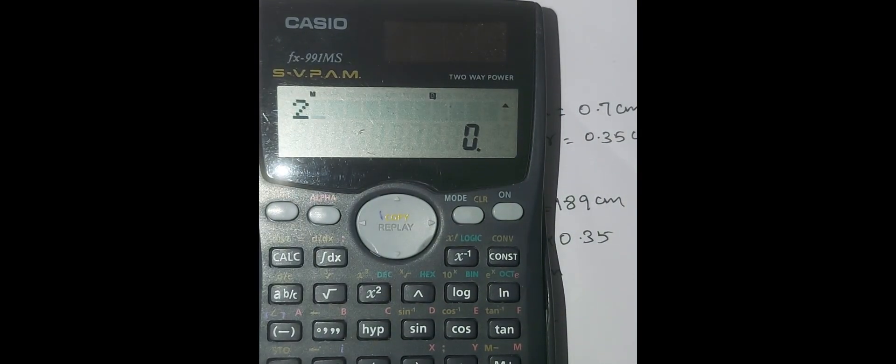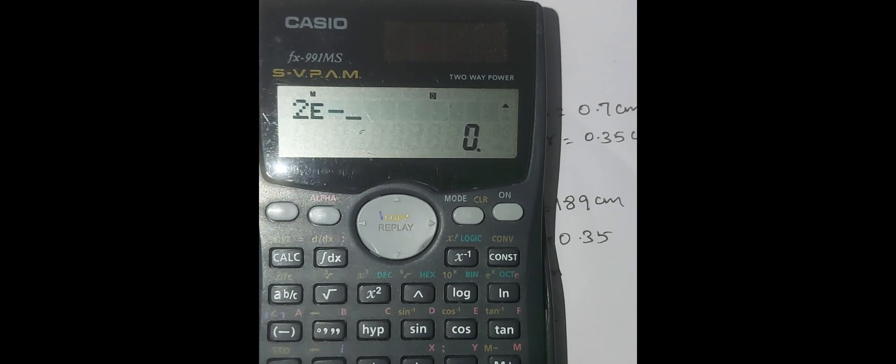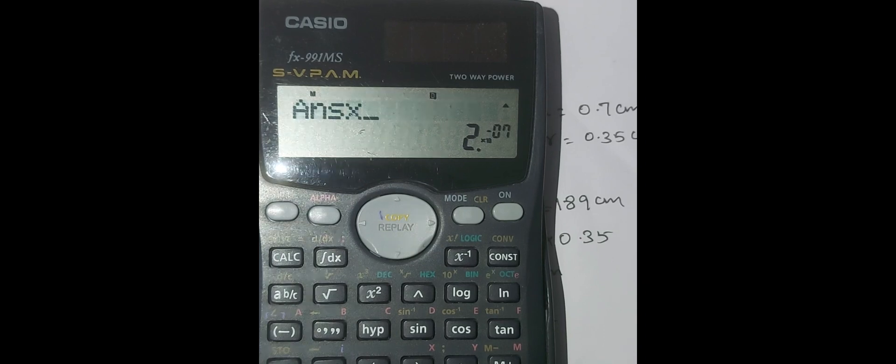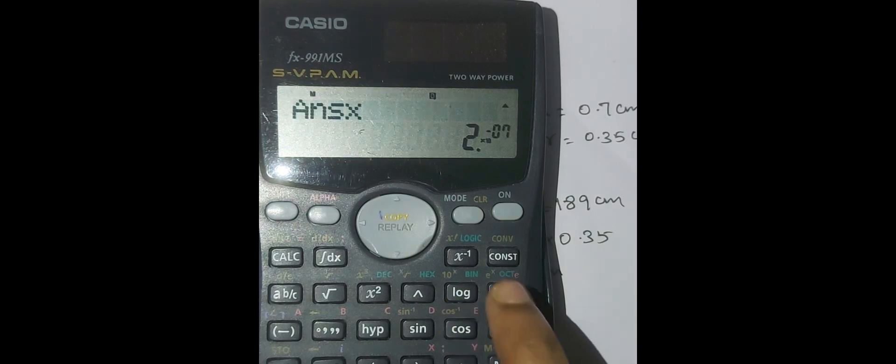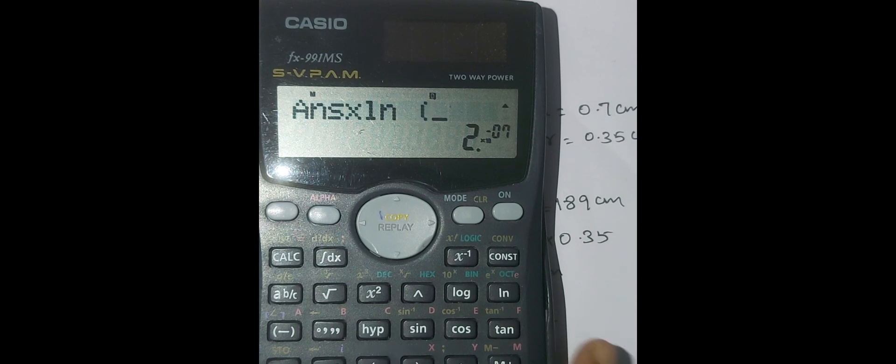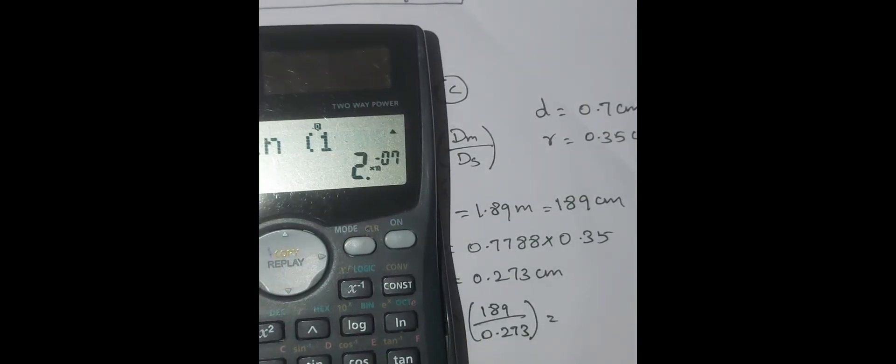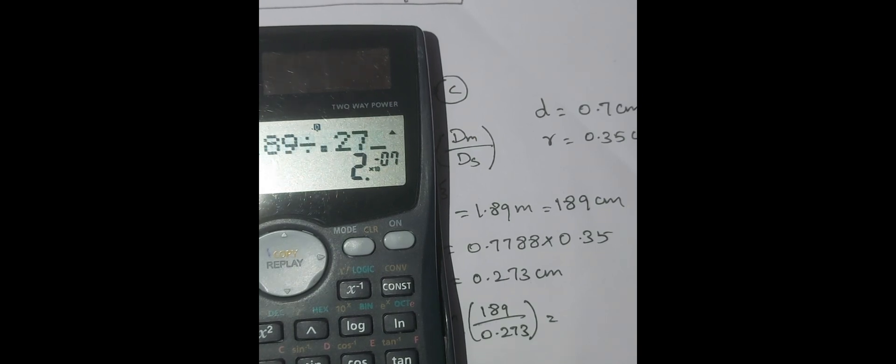Many students make mistake here with exponential minus 7. So if you press 2 into 10 power minus 7, multiplied by ln of 189 divided by 0.273.